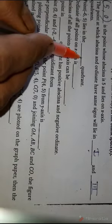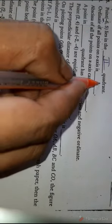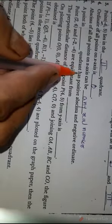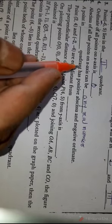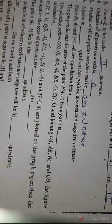Third question: point (-6, 5) lies in the dash quadrant. The abscissa is negative, so it will be the second quadrant. Fourth: ordinate of all points on the x-axis is 0. Fifth: abscissa of all the points on the x-axis can be any real number, because the number line can extend from 0 to any number.